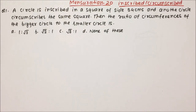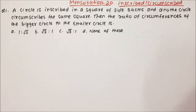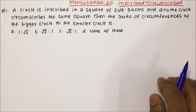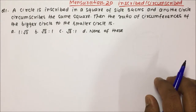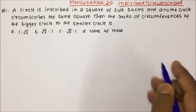So friends, today in our session we are going to learn inscribed and circumscribed, where a circle will be inside and outside the square. Let us try to solve question number 1 and understand the concept. A circle is inscribed in a square of side 54 cm and another circle circumscribes the same square. We need to find the ratio of circumferences of the bigger circle to the smaller circle.